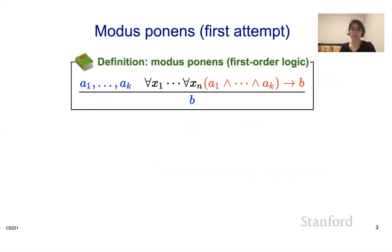So how can we do modus ponens in first order logic? If this is a definite clause — for all x1 through xn, a1 and through ak implies b — one possible first attempt at modus ponens is: we have this definite clause, and in addition our knowledge base has a1 through ak, and based on that we should be able to derive b. So does this work? Does this definition of modus ponens work?